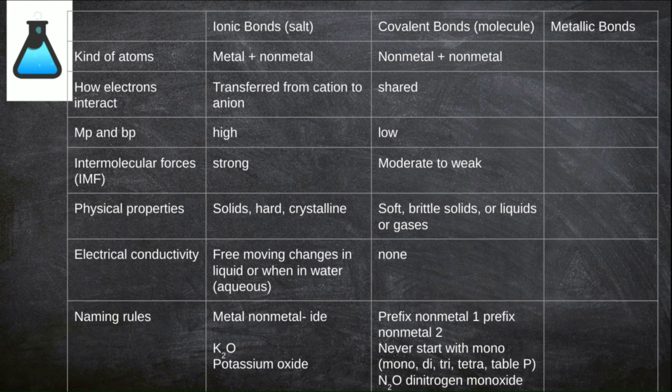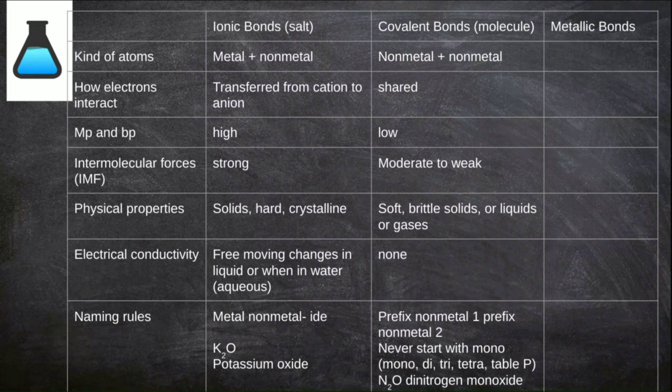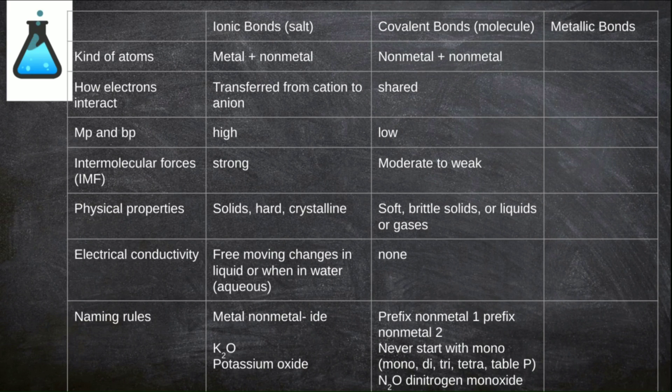Conversely, covalent bonds have moderate to weak intermolecular forces, or the force that holds one molecule next to its neighbor. That means its melting points and boiling points will be much lower, as they'll be easier to turn to liquids and gases. Covalent solids tend to be soft, brittle solids, but many covalent compounds are also liquids or gases at STP. Because there are no free-moving charges in covalent compounds, they never conduct electricity.